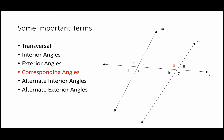Corresponding angles are pairwise collections of angles in the same general area when two lines are cut by a transversal. For the first pair, angles 1 and 5 — notice they are both in the upper left-hand side of their respective cluster of four angles. Angle 1 is in the upper left, angle 5 is in the upper left. Other pairs of corresponding angles are: angles 2 and 6, angles 3 and 7, and angles 4 and 8.